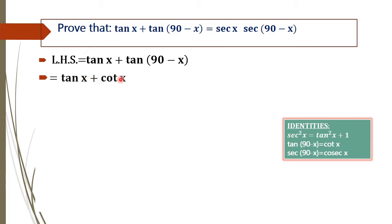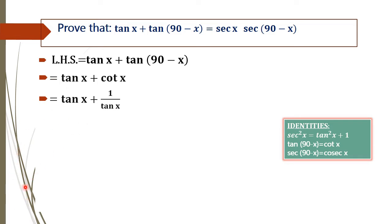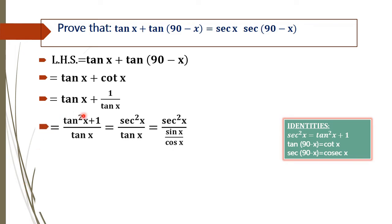Now we have to rearrange this equation in terms of sec x in order to get the right hand side. We know that sec squared x equals 1 plus tan squared x. In order to get tan squared x, we rearrange cot x as 1 by tan x. By taking the LCM we get tan squared x plus 1, all divided by tan x. Then tan squared x plus 1 becomes sec squared x, divided by tan x.